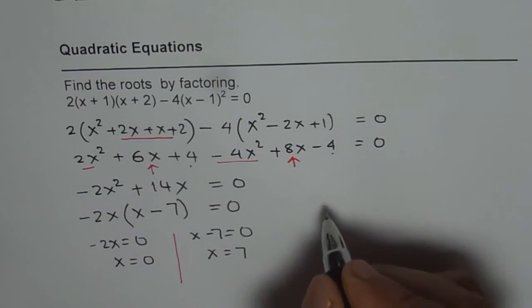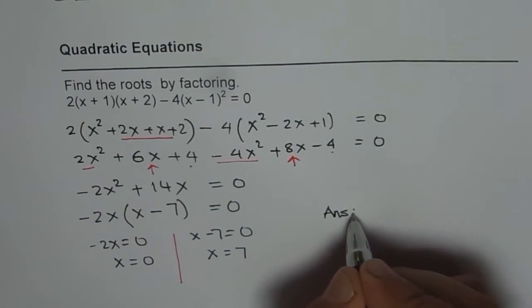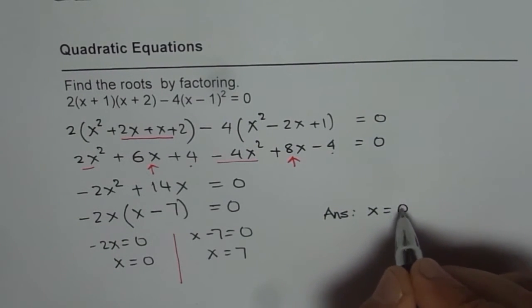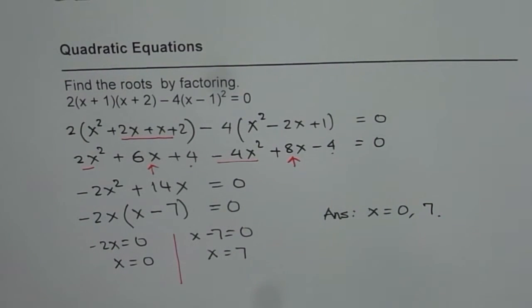Perfect. Therefore, our answer is x = 0 and 7. So these are the two solutions for the quadratic equation given to us. Thank you.